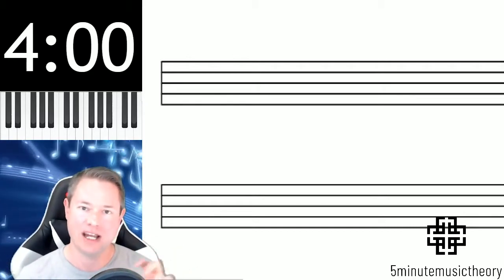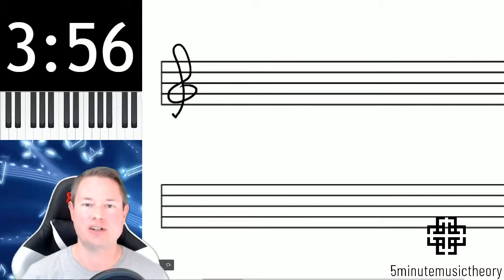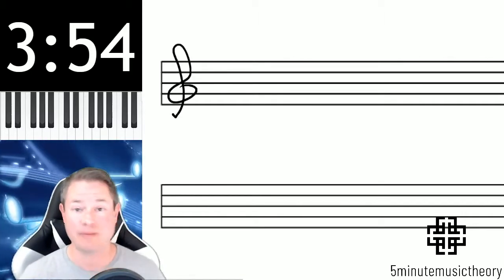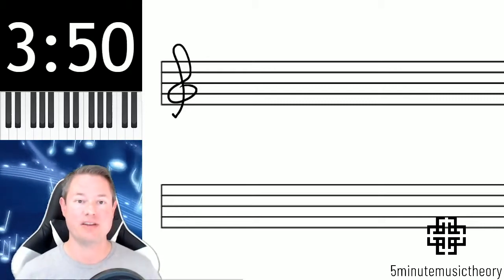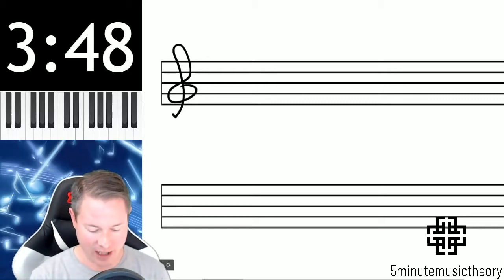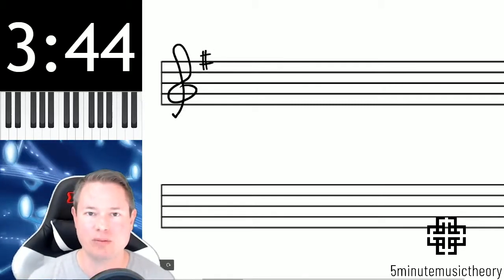At the beginning of every line next to the clef, so I'll start with the clef, there's a series of either sharps or flats. Sometimes there's none of them, and those are what determine the key. And once they're placed in that spot, like for example, if I put an F sharp right here next to that treble clef,